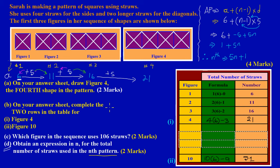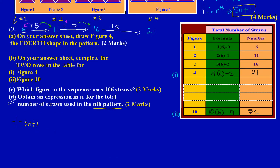Now that we have the formula, let's move on to Part C. We need to find which figure in the sequence uses 106 straws. Using our nth term expression 5n + 1, we set it equal to the total number of straws: 5n + 1 = 106.